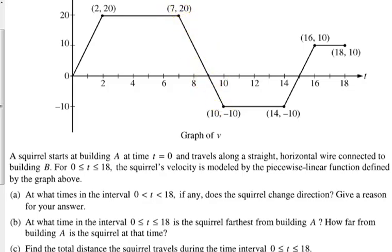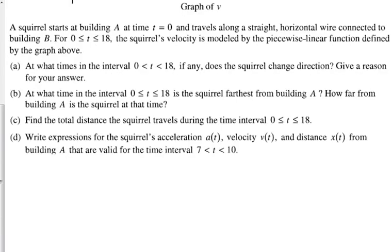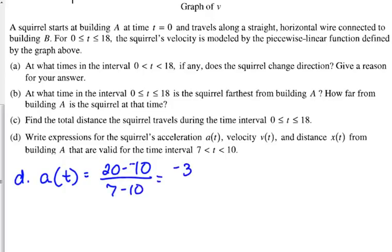Between 7 and 10, the velocity is a linear function. So the acceleration is simply going to be the slope of that line because acceleration is the derivative of the velocity. If the velocity is linear, then we know that the acceleration is going to be constant. So what they did was they calculated the slope between 20 minus negative 10 over 7 minus 10. So we get positive 30 over negative 3. So the acceleration is negative 10. Now, they did not give us any units, so just leave it at negative 10.